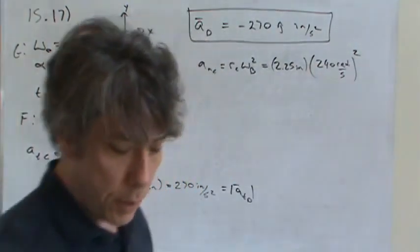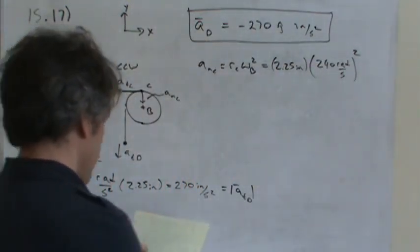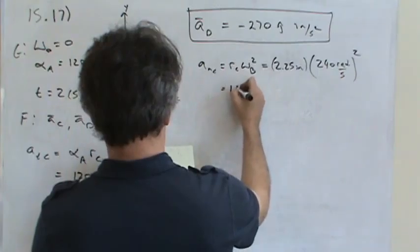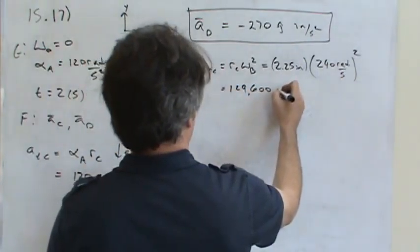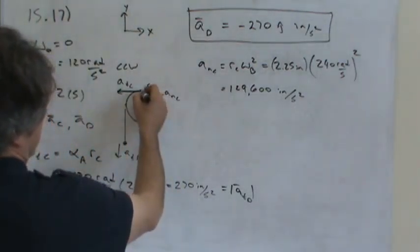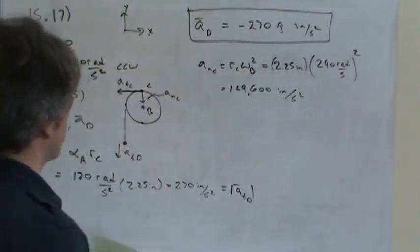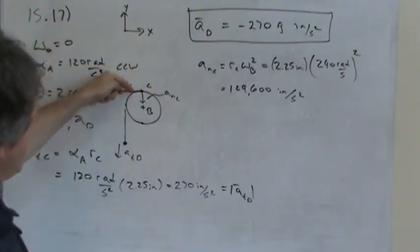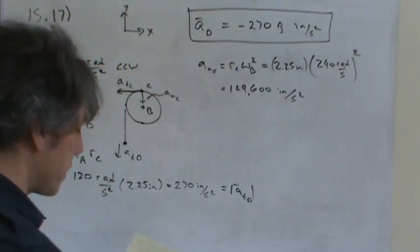In fact, when you plug all that into your calculator, you'll find that the normal acceleration is 129,600 inches per second squared. Now notice that the normal acceleration of C has to be down towards the center of curvature because C is following a path around this curved disk.